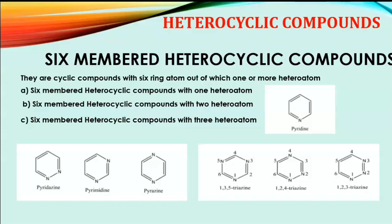The next classification is six-member heterocyclic compounds, where a ring has six atoms with one or more heteroatoms. It is further classified into three classes. The first is six-member heterocyclic compounds with one heteroatom. The example is pyridine, which contains only one heteroatom — nitrogen — making it a six-member heterocyclic compound.